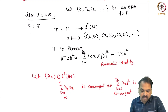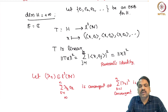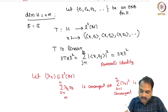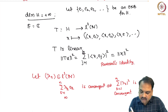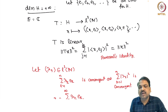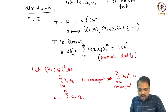In the infinite dimensional setting, suppose H is an infinite dimensional separable Hilbert space with countable orthonormal basis E1, E2, E3, so on. We establish a one-to-one onto isometry from H to L2(N). Take element X in H and send it to the sequence (⟨X, E1⟩, ⟨X, E2⟩, ⟨X, E3⟩, ...) in L2. This is a linear map, and norm of TX squared equals the sum from j=1 to infinity of |⟨X, Ej⟩|^2, which by Parseval's identity equals norm X squared, so T is an isometry.